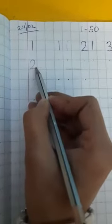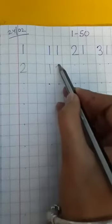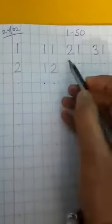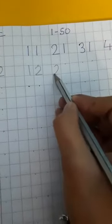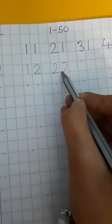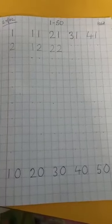Okay? So, write here 2. Here, after 11, 12. Here, 21. And after 21, 22. So, like this, you have to complete this page and then send a picture to me. Okay? Bye.